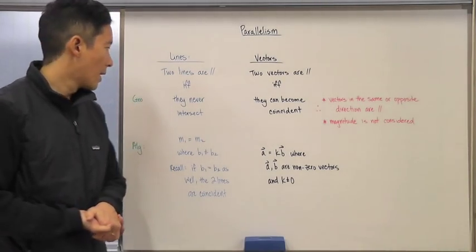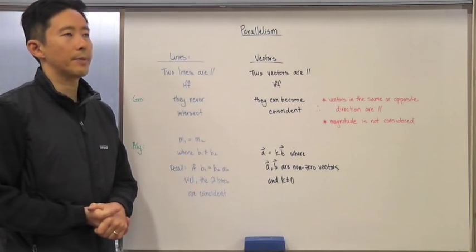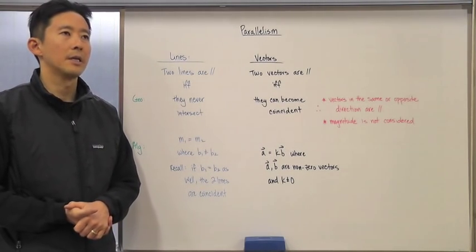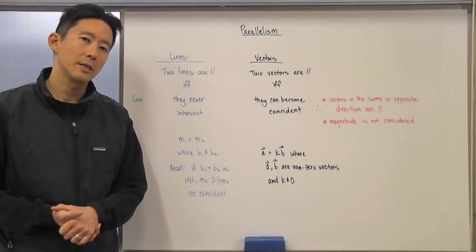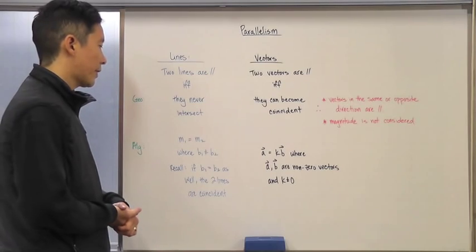If we take a look at the algebraic perspective, we're talking about two lines in y-intercept form. If the slopes are the same, then we know for a fact that they're parallel, so long as the y-intercepts are different.